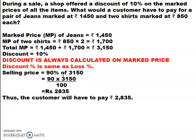The shop gives a 10% discount on all items, so selling price = 90% of 3150. Why 90%? Because discount of 10% means 100 − 10 = 90%. So SP = 90/100 × 3150 = Rs. 2835. The customer will have to pay Rs. 2835 instead of Rs. 3150. Students, try these problems yourself in notes — that is what will tell you whether you have understood the concept or where you are getting stuck.